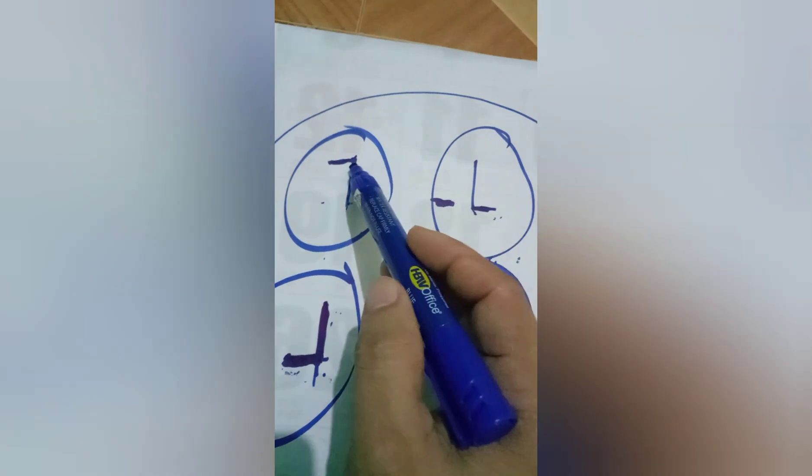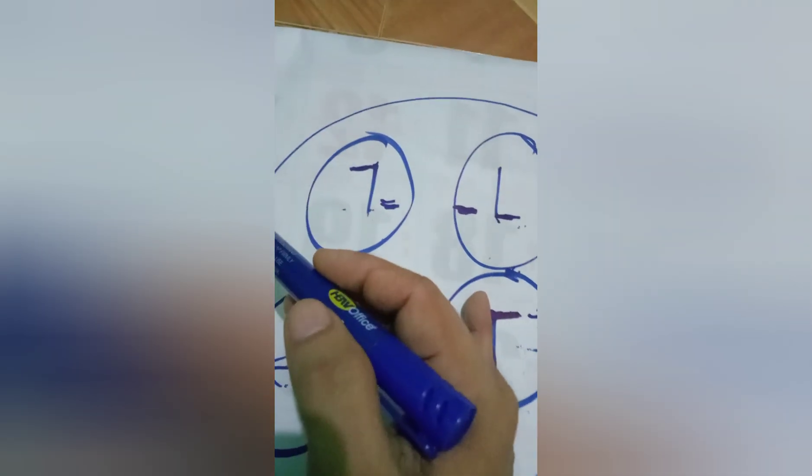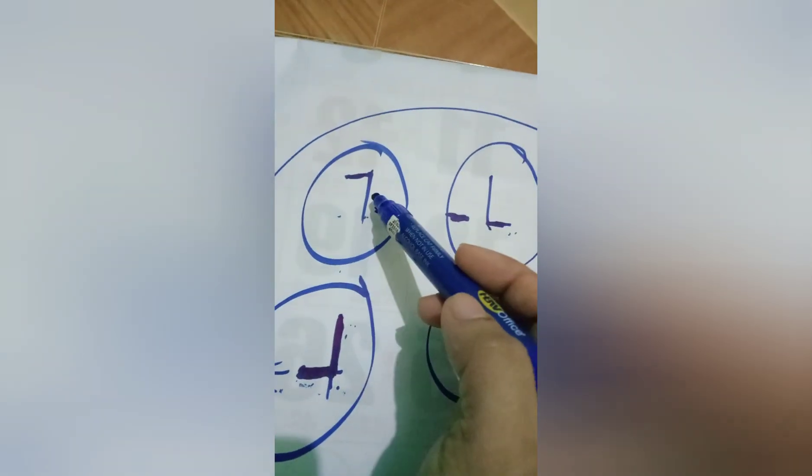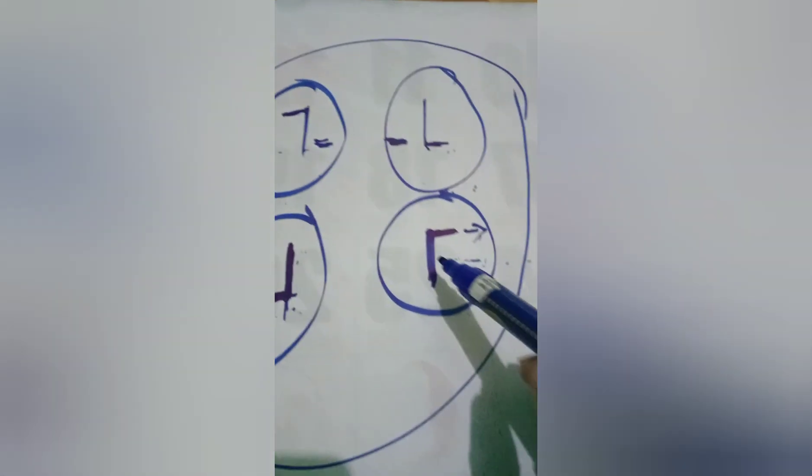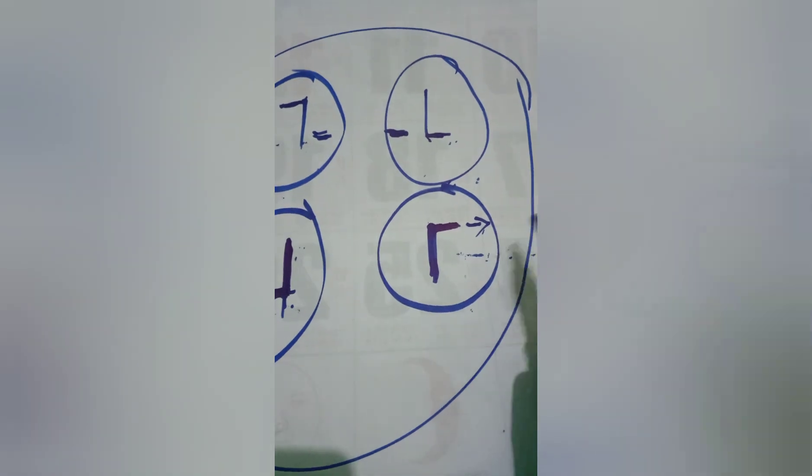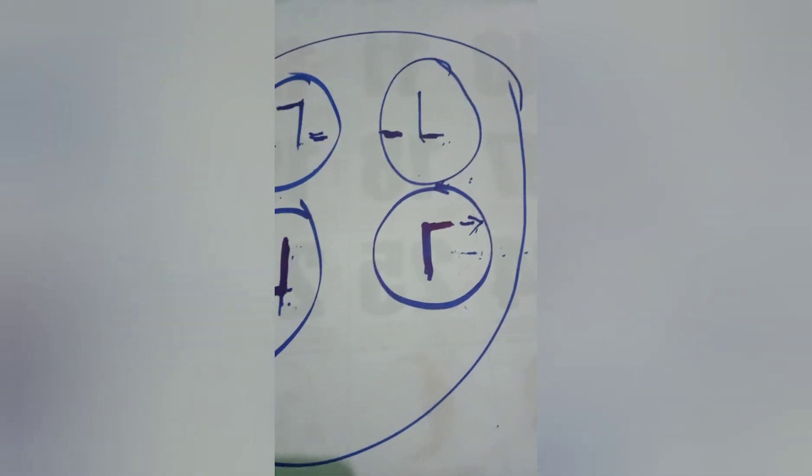Kapag ang short arm ay, ulitin natin, kapag ang short arm ay papunta sa kaliwa, yan po ay 7. Kahit ganito yung pagka-ukit, reverse po yung pagka-ukit, ito po ay 7. At saka ito po ay L. Kapag papunta naman sa kanan.